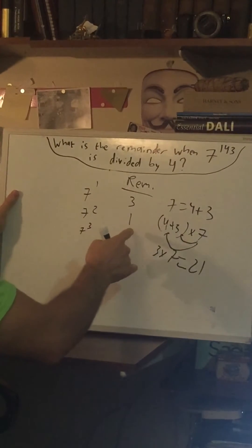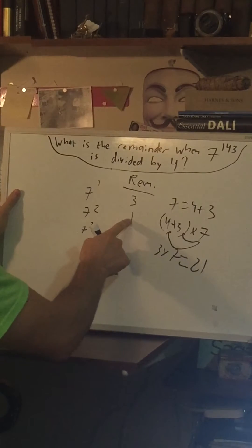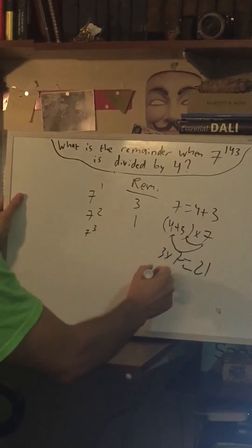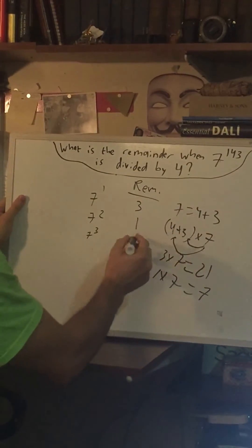So now we're going to do the same thing again. Rather than calculate 7 cubed, we're going to take this, multiply it by the next 7, and get 7. 7 divided by 4 leaves a remainder of 3.